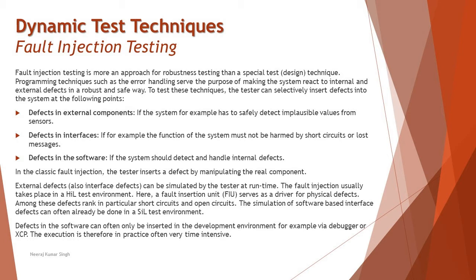The second point is defects in the interfaces. For example, the function of the system must not be harmed by short circuit or lost messages at any point of time, because the error handling code will try to handle that error and bring the system back to a nominal or normal state.